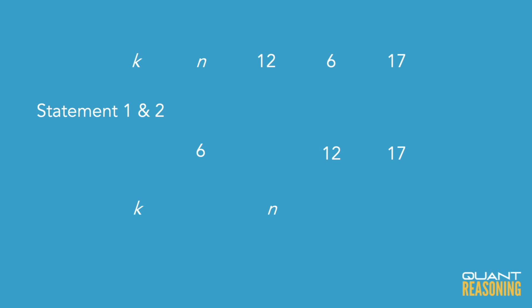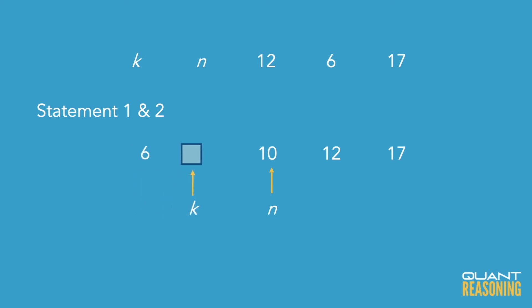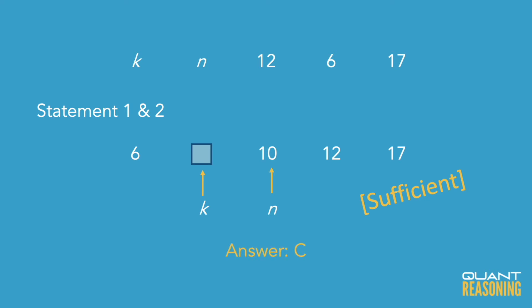If we combine these statements, we know that at least one of k or n is 10, and the other one is less than or equal to 10. And from statement one, we know that of k and n, n is the bigger one. If you combine that information together, you can infer that n must be 10, and therefore together they're sufficient, and the correct answer is C.